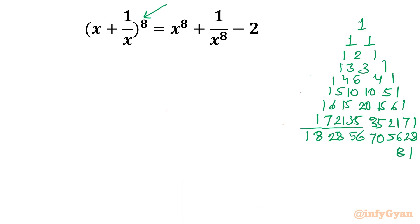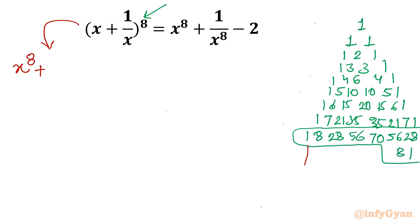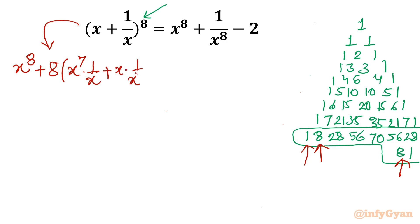What I will do now is take these coefficients as common factors. Instead of taking the variable common, I will consider these coefficients common. On the left hand side I will write: x^8 + 1 is done. Now 8 — taking 8 from this side and 8 from this side, I will write 8 as common in bracket: x^7 times 1/x, plus x times 1/x^7. 8 is done from both sides.